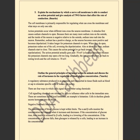The second part of number five says: outline the general principles of hormonal action in animals and discuss the role of hormones in the regulation of blood glucose concentration. Breaking this down, the first part concerns the principles of hormone action, and the second part concerns the regulation of blood glucose concentration — worth seven marks. A hormone is a regulatory substance produced in an organism and transported in tissue fluid, such as blood or sap, to stimulate specific cells or tissues into action.